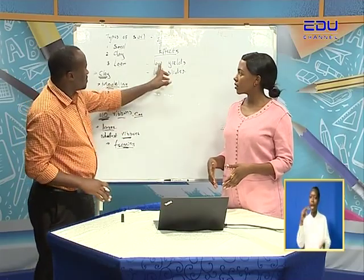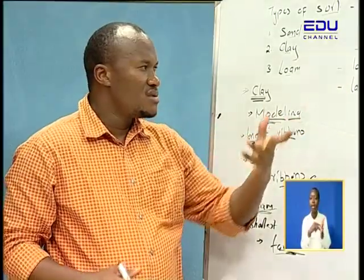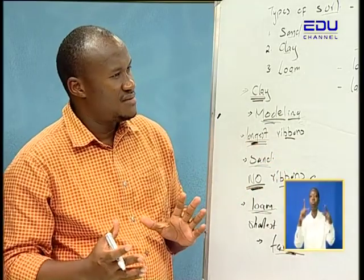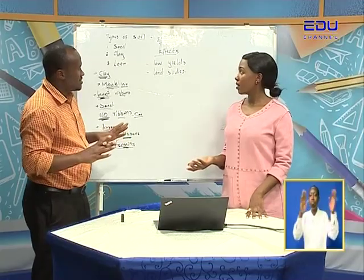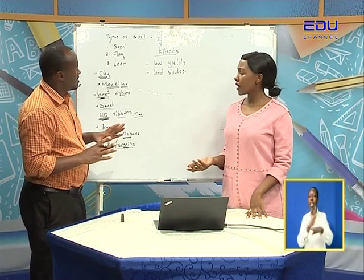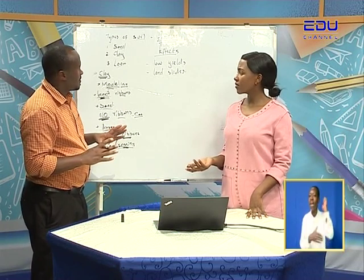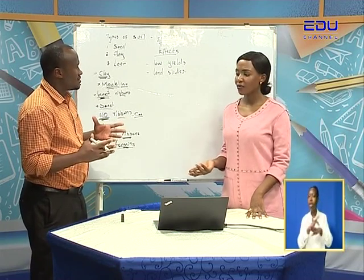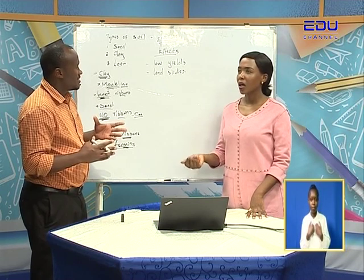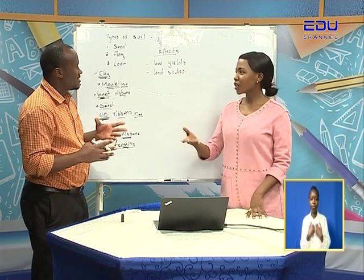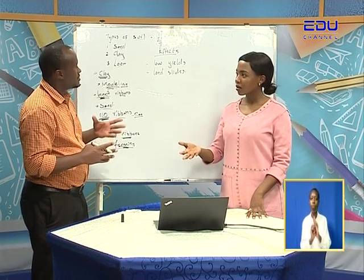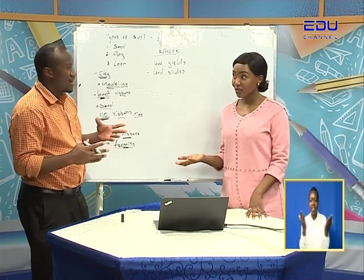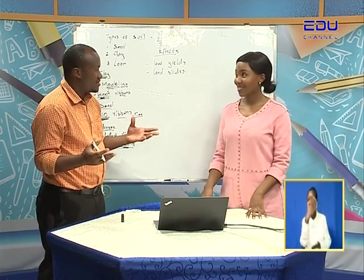When you talk about low yields, that's a negative. Landslides — that's also negative. But does it mean it's all negative? No — we have positives. For example, we have canyons, valleys — some of them are really beautiful. You can go hiking there and all that.